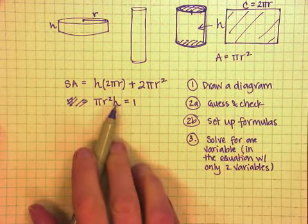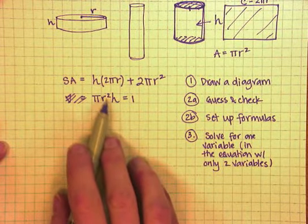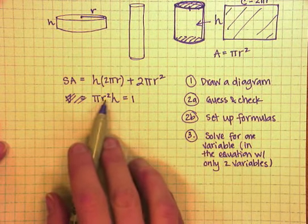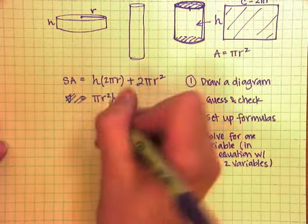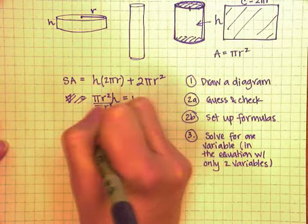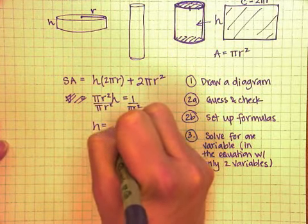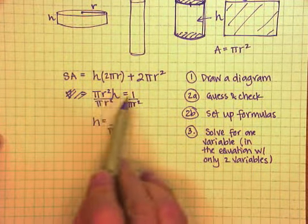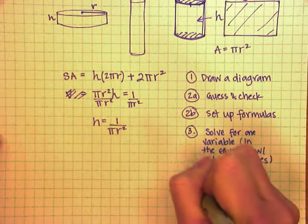So if I want to solve for one of these guys, I just want to pick whichever one I think is going to be easier. Since the h doesn't have an exponent with it, I think getting the h by itself will be easier. Now the h is connected to the r² and the π with multiplication. And I know the opposite of multiplication is division. So I know I can divide both sides by πr². So I get h equals 1 over πr². So after I solve for one of my variables in this equation with only 2 variables in it, now I'm going to substitute into the equation I haven't used yet.